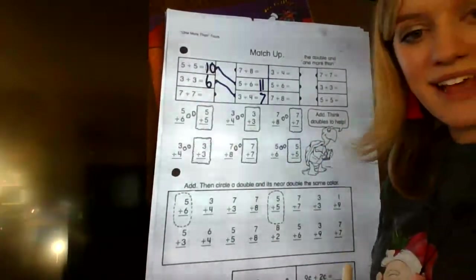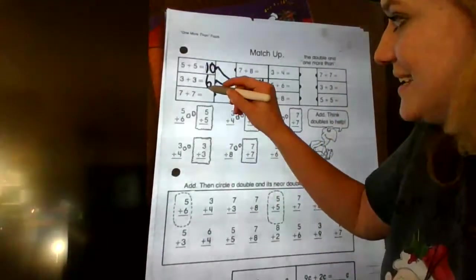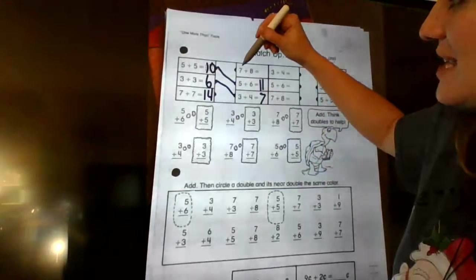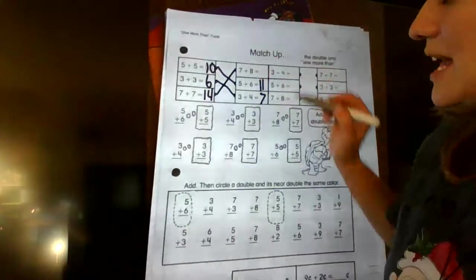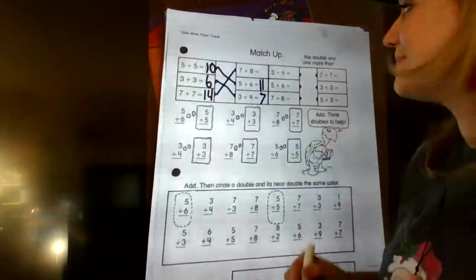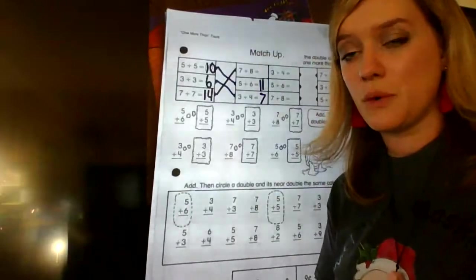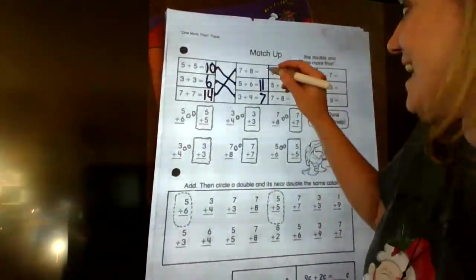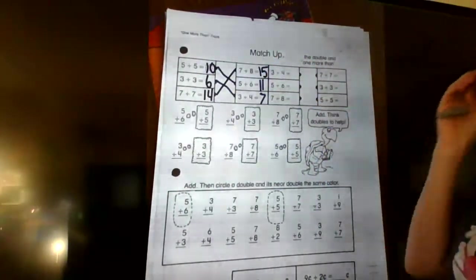Because I can still do 3 plus 3. I can still do that double. I just have to add 1 more. So 3 plus 4. 3 plus 3 we said is 6. Add 1 more. 7. So the answer is 7. Alright. Our last double, 7 plus 7, 2 weeks, is 14. And it's our last one, but we'll just double check. 7 plus 8. Oh, yeah. That's 1 more than 7. So that's going to match up. So 7 plus 8. Well, we said 7 plus 7 is 14. So 1 more than 14 is 15. There we go. That's how you do it.